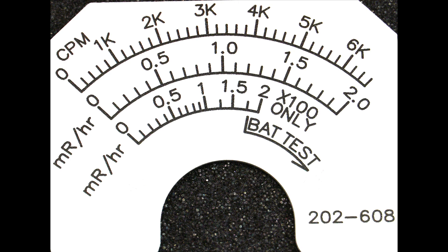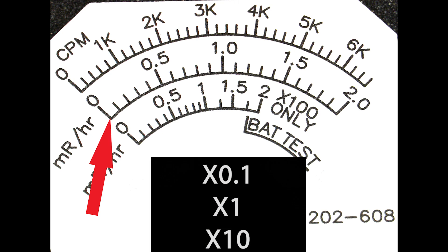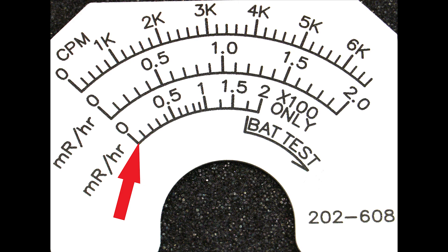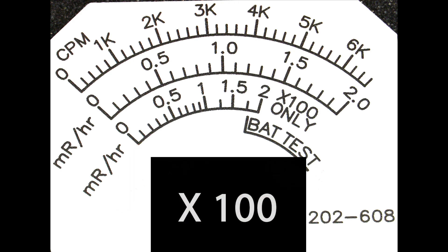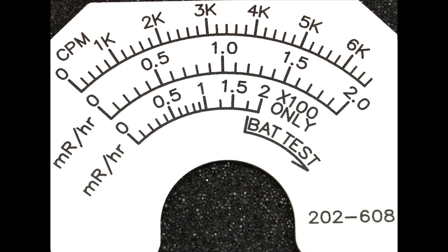Similar to the previous example, the middle linear 0–2 mr per hour scale is valid only for the times 0.1, times 1, and times 10 multipliers, and the bottom nonlinear 0–2 mr per hour scale is valid only for the times 100 multiplier. Like the exposure rate meter face, a combo meter face is specifically designed to be used with a particular detector.